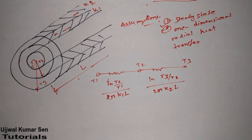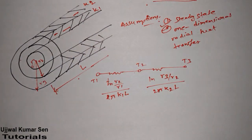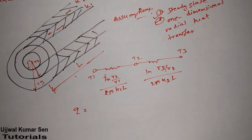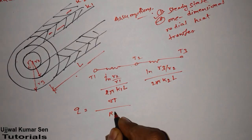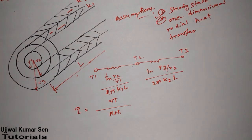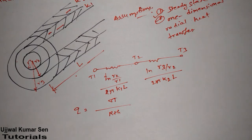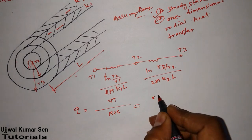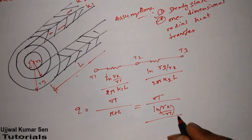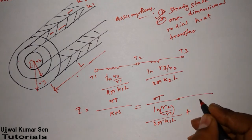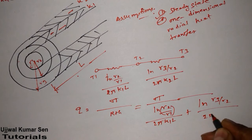Now, if we want to find the heat transfer rate for this diagram, we use Q = ΔT / R_th. That is the simplest formula. So Q equals ΔT divided by the total thermal resistance, which is ln(R2/R1)/(2πK1L) plus ln(R3/R2)/(2πK2L).